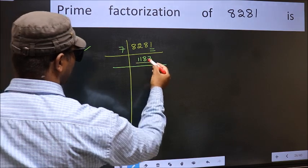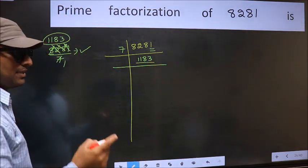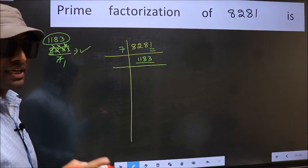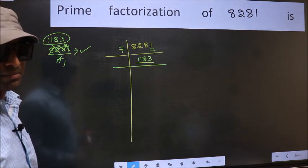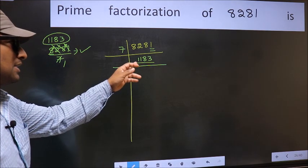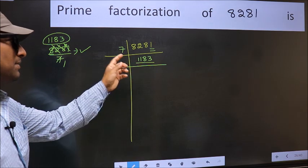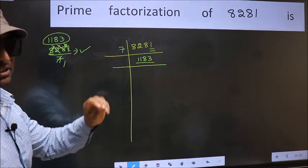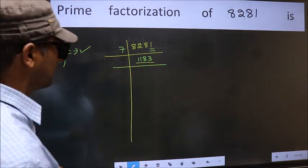Now for this number we don't need to check divisibility by 2, 3 or 5 as we had already checked before. So start checking divisibility of this number from 7 onwards. So let us check.